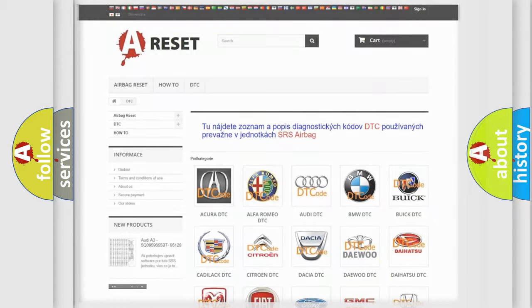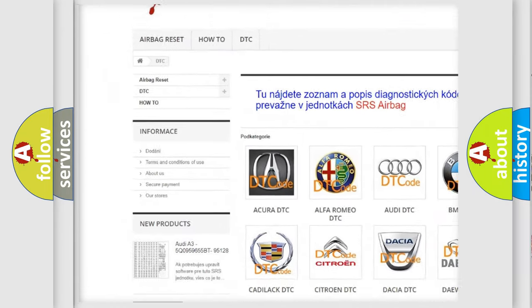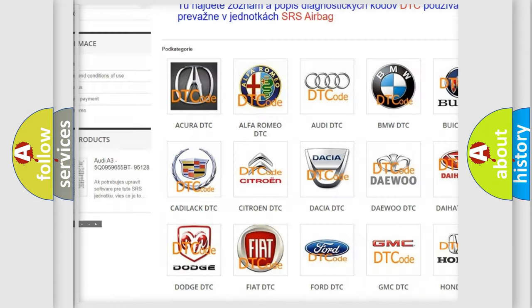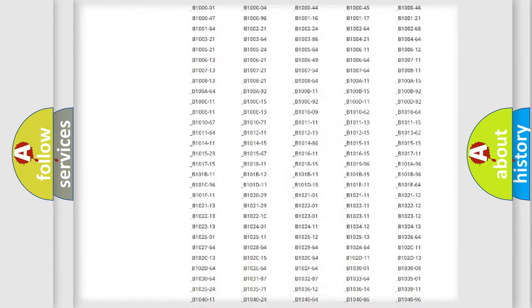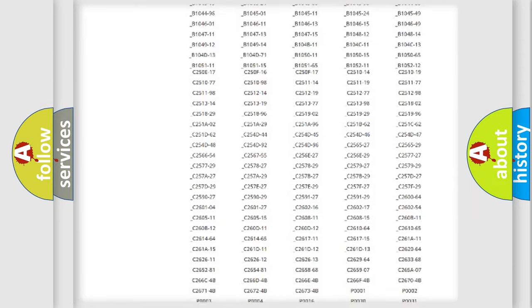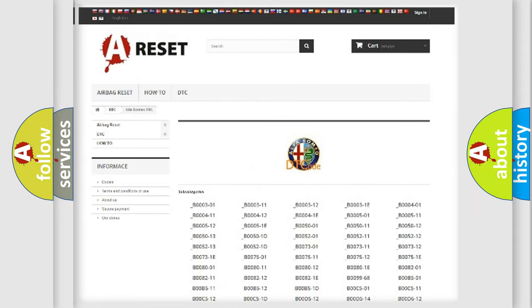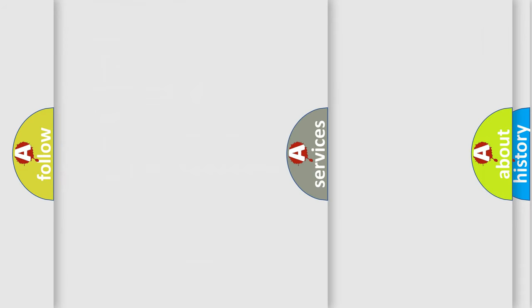Our website airbagreset.sk produces useful videos for you. You do not have to go through the OBD2 protocol anymore to know how to troubleshoot any car breakdown. You will find all the diagnostic codes that can be diagnosed in Alfa Romeo vehicles, and many other useful things.